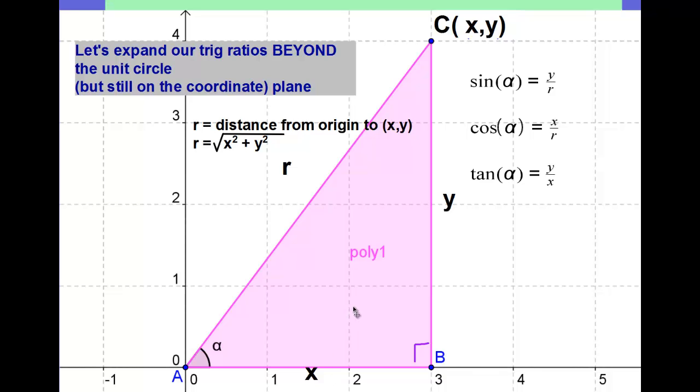If we want to expand that beyond the unit circle, the same trig ratios apply no matter how big the triangle is. The only difference is, instead of r being a nice convenient one, sometimes r is another number. And we use the Pythagorean theorem to find r, because it is a right triangle.